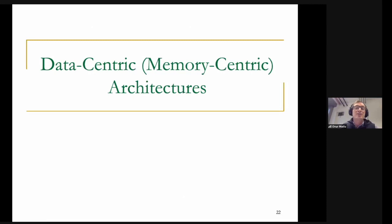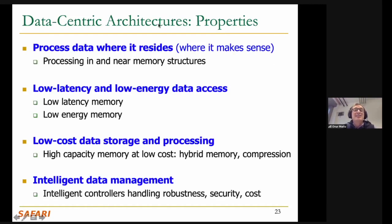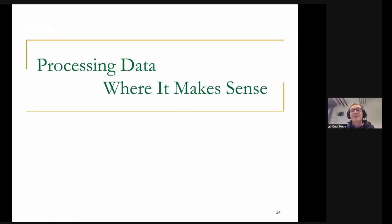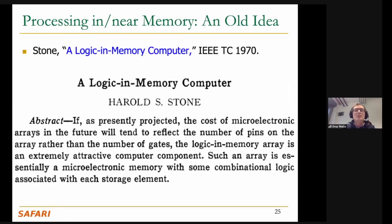I also call this memory-centric architectures. The properties of a data-centric architecture include: first, process data where it resides and where it makes sense, while it's moving is also possible; second, respect data — enable low-latency and low-energy access to data; third, low-cost data storage and processing; and fourth, intelligent data management with intelligent controllers handling robustness, security, cost, privacy, going into the future. I'm going to talk about processing data where it resides. Processing in or near memory — everyone here, at least the older folks, knows it's not a new idea. This is one of the earliest papers in the area by Harold Stone, done in the late 1960s: 'Logic and Memory Computer.' This idea has been looked at many times in the past 50-plus years.